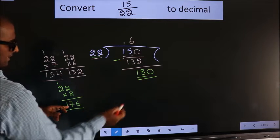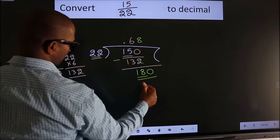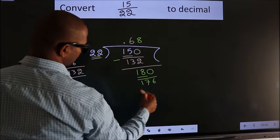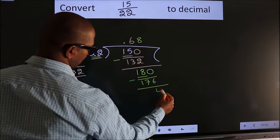So, 176 is close to 180. So, we take 8. 176. Now, we subtract. We get 4.